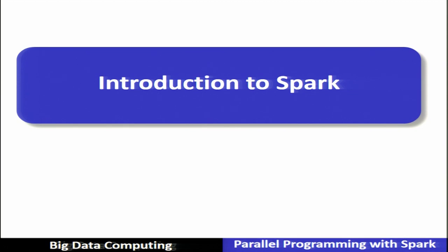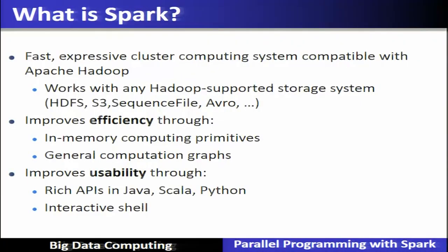What is Spark? It is a fast, expressive cluster computing system which is compatible with Apache Hadoop. It works with any Hadoop-supported storage system such as HDFS, S3, sequential files, and so on. It improves efficiency through in-memory computation primitives and general computational graphs, and improves usability through rich APIs in Scala, Java, and Python, with an interactive shell.